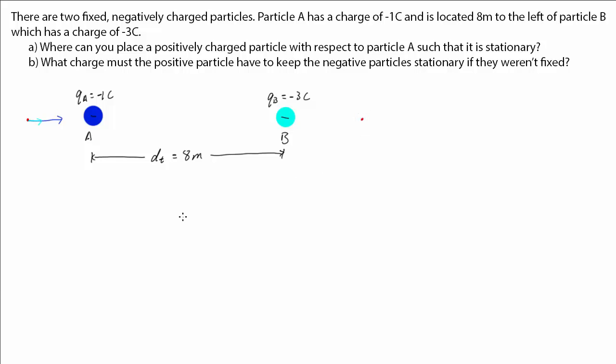Same if we place the positive particle to the right of B. The particle will experience a net force to the left. If we place the positive particle above A and B, then it will be pulled down. Same for placing it below A and B, it would be pulled up.